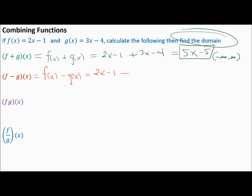Subtracting has an extra issue. When we added, we could use parentheses or not. But when we're subtracting 3x minus 4, those parentheses are absolutely required — because we're subtracting the entire function, not just the 3x. So we need to distribute: 2x minus 1 minus 3x plus 4. Without those parentheses you'd get it wrong.